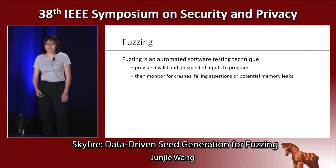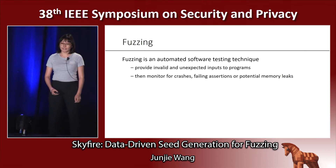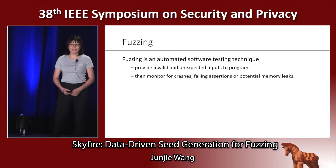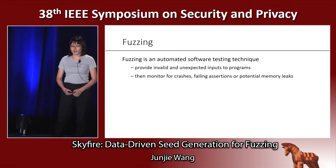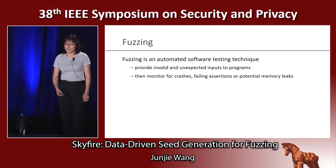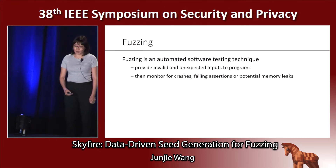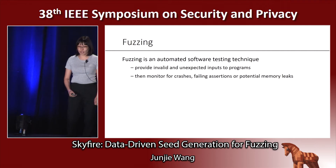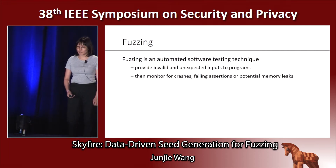Fuzzing is an automated software testing technique. It provides invalid and unexpected inputs to programs that monitor for crash, failing assertion, or potential memory leaks.